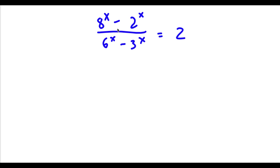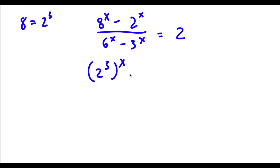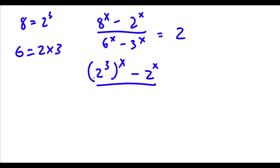So the first thing I'm going to do is rewrite 8 to the power of x as 2 to the power of 3 to the power of x, because 8 is equal to 2 to the power of 3. So now I have 2 to the power of 3 to the power of x minus 2 to the power of x over — now 6 is equal to 2 times 3 — so now I have 2 times 3 to the power of x minus 3 to the power of x, and this is equal to 2.